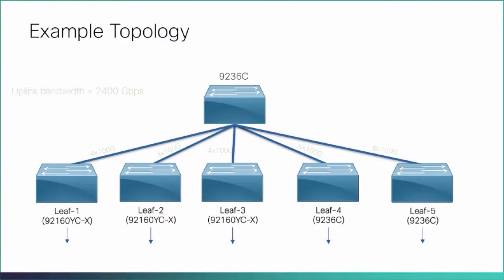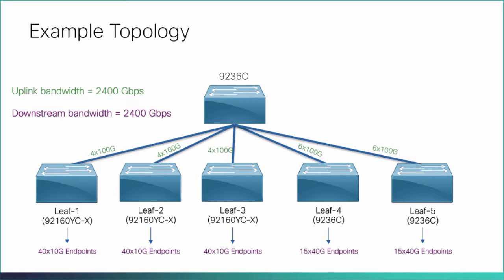The total uplink bandwidth and total downstream bandwidth must be equal. The size of the flows traveling through the IP fabric is configurable and based on the type of video technology being used. Using standard HD video, this sample topology could support 1,600 1.5 gigabit per second flows.